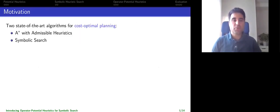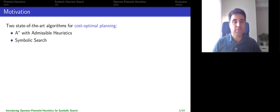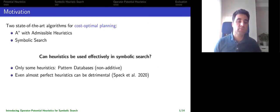In this paper we are dealing with cost-optimal planning problems, and the motivation comes from the fact that in the last few years there have been two main contenders for the state of the art: admissible heuristics and symbolic search. So the question is: can we use those admissible heuristics in symbolic search as well?